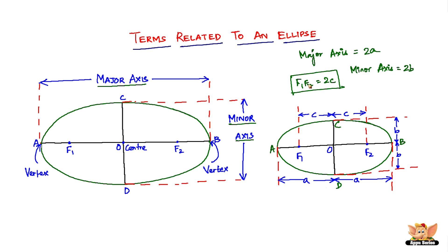These three measurements are the most important as far as an ellipse is concerned. We do have a couple more concepts to cover in the forthcoming videos. As far as this video is concerned, all you have to take away is the parts of an ellipse, the length of the major axis, the length of the minor axis, and the length of the line between the two foci. I'll see you in the forthcoming videos with more concepts based on an ellipse.